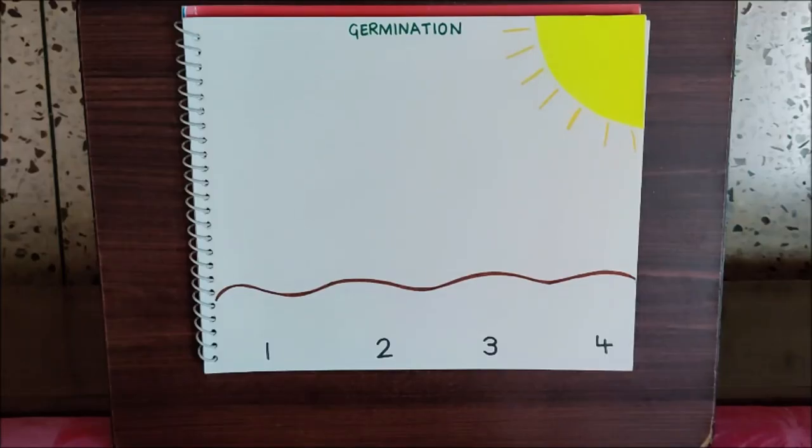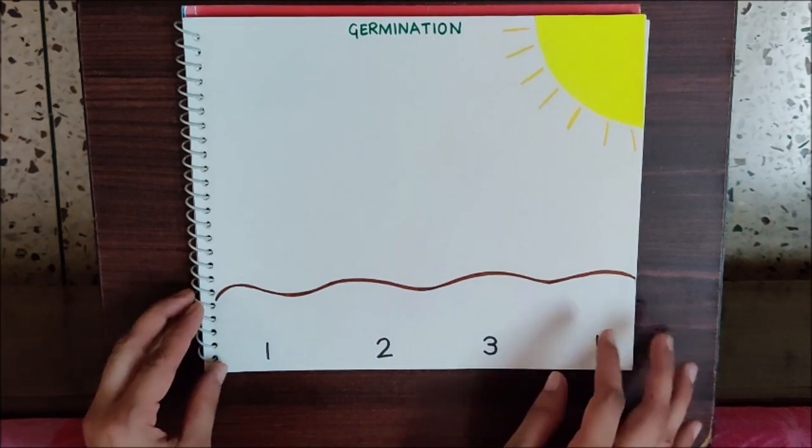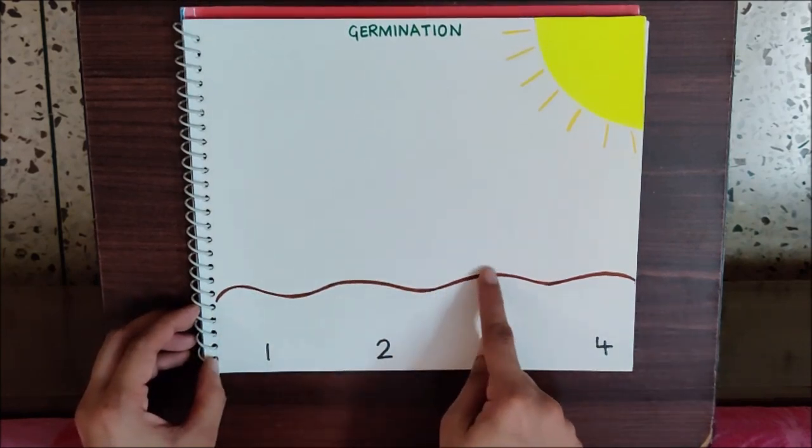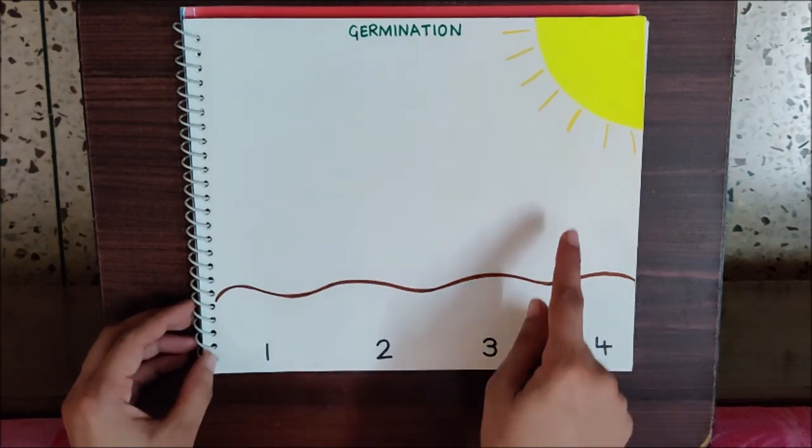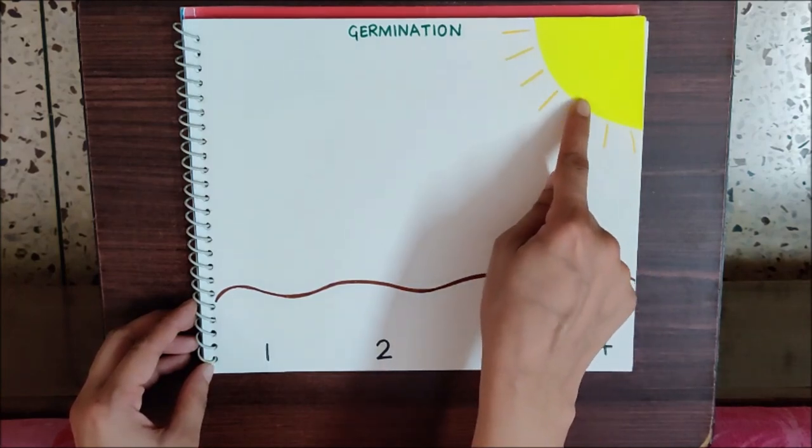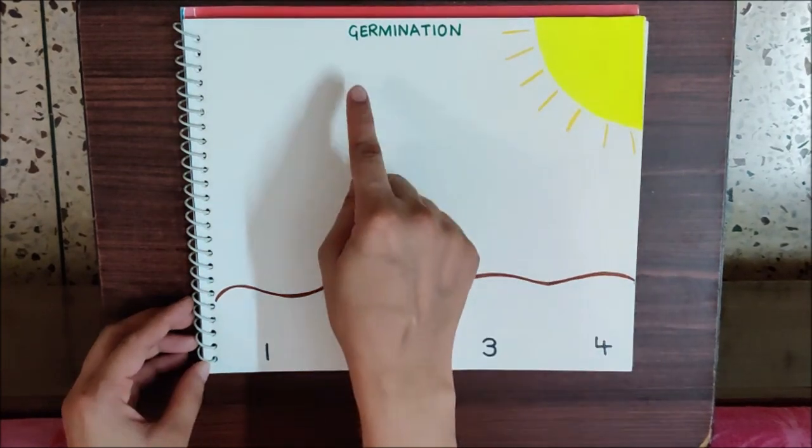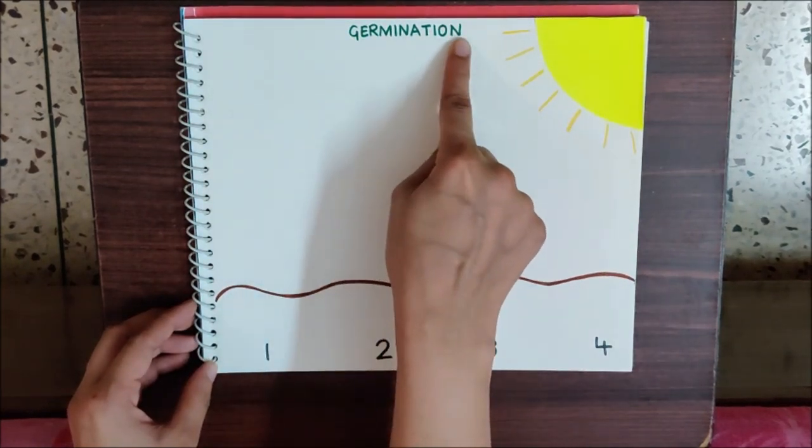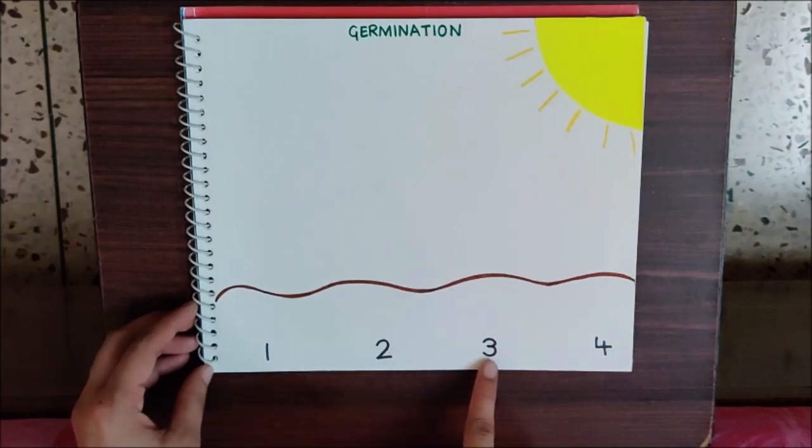Now children, let us do the germination activity in our drawing file. Look here, in my drawing file I have made this line which shows that it is soil. With the craft paper, I have made the sun. I have used yellow craft paper and made sun rays. And I have also written here 'germination.' And as you can see, numbers are also written here: 1, 2, 3, 4. These numbers show the stages of germination.